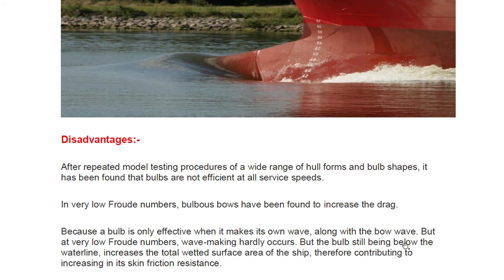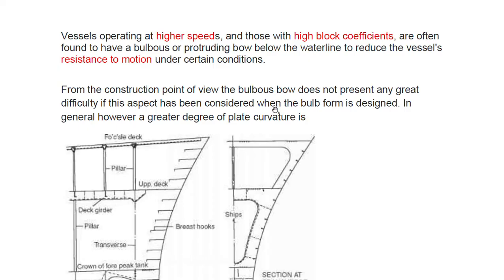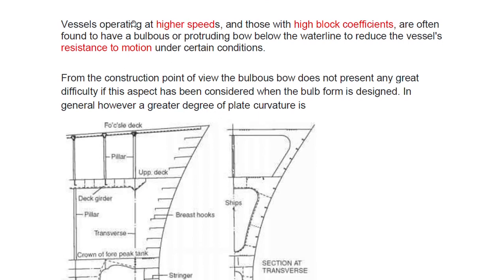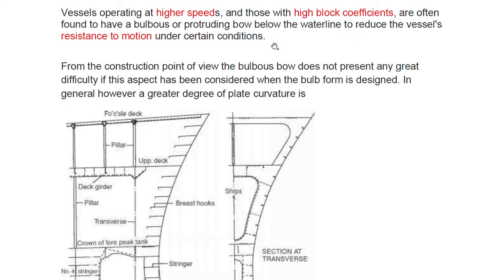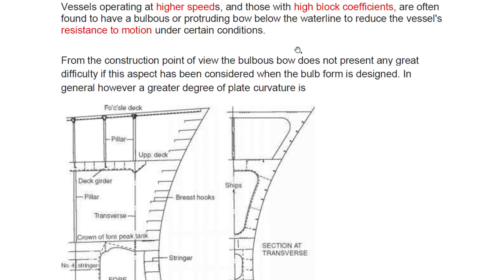At very low Froude numbers, wave-making hardly occurs, but the bulb, still being below the waterline, increases the total wetted surface area. An increase in wetted surface area acts as additional resistance, contributing to increased skin friction resistance. Vessels operating at higher speeds and those with high block coefficient are often found to benefit from a bulbous bow protruding below the waterline to reduce resistance to motion under certain conditions.